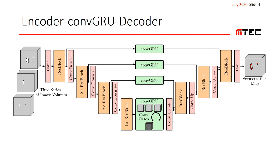The convolutional gated recurrent unit outputs its last state for further processing. In this way, the decoder receives a compact 3D spatial representation that is then upsampled into a segmentation map depicting lesion activity in the current follow-up scan. An advantage of this approach is that an arbitrary number of time points can be used, which is particularly useful for application, considering that patients will often have a different number of scans taken.